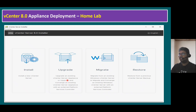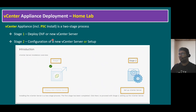The upgrade option is used if you have an older version you want to upgrade to the latest. The migrate option is used if you have a Windows-flavor vCenter and want to migrate to the appliance version. The restore option is useful if your vCenter has corruption or unexpected disconnection issues and you want to restore from a backup. The vCenter Server Appliance installs in a two-stage process: Stage 1 is deploying the OVF, and Stage 2 is setting up the vCenter Server Appliance.